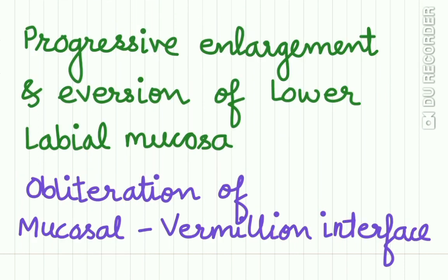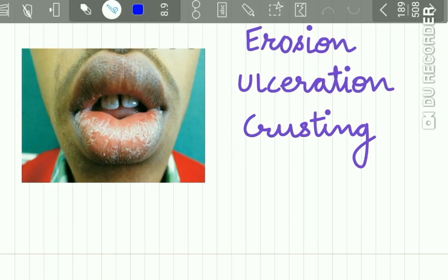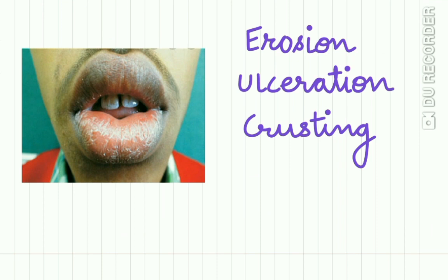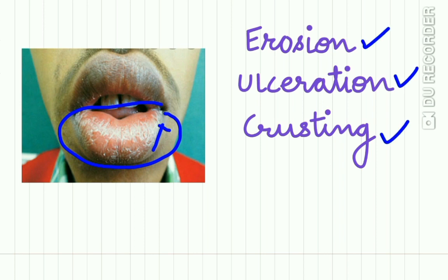In Cheilitis Glandularis there is progressive enlargement and eversion of the lower labial mucosa, and this eversion causes obliteration of the mucosal-vermilion interface. In this diagram you can see eversion and enlargement of the lower labial mucosa with obliteration of the mucosal and vermilion border. Also you can see erosion, ulceration, and crusting of the lips.